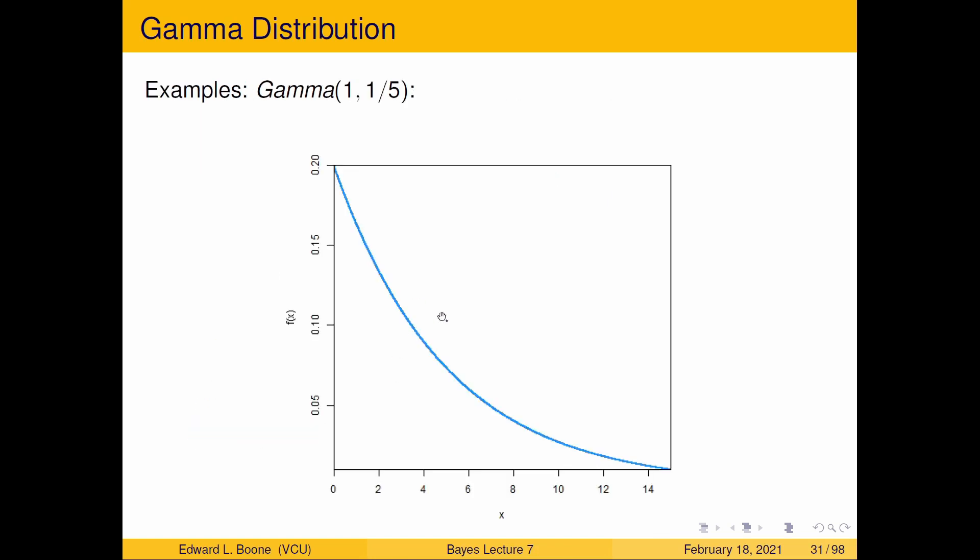Okay, so here's some examples. So here's a gamma one-fifth, and you notice here it goes from at zero, it's quite likely, has high likelihood, and as it goes down, as x increases. So this is one form of it, and this is also known as the exponential distribution, which will be coming up soon in another video, because it models something else well.